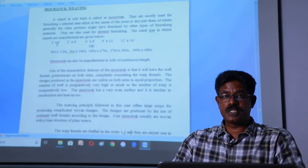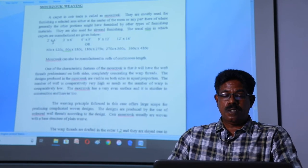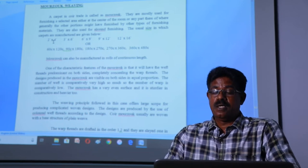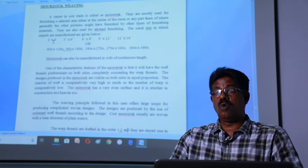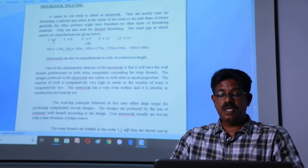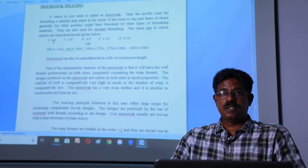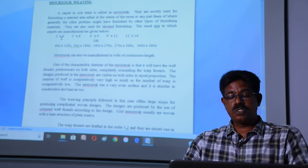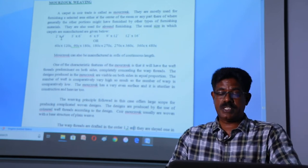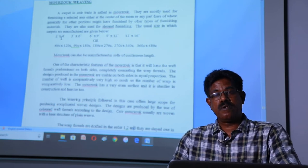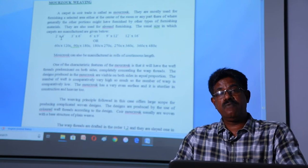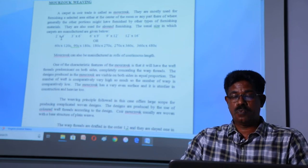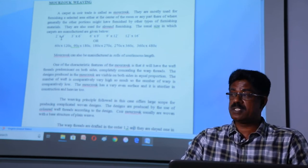One of the characteristic features of the marsuk is that it will have the weft threads predominant on both sides, completely concealing the warp threads. The designs produced in marsuk are visible on both sides in equal proportions. The number of wefts is comparatively very high, so much so the number of warp is comparatively low. The marsuk has a very even surface and it is sturdier in construction and heavier too.